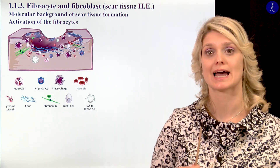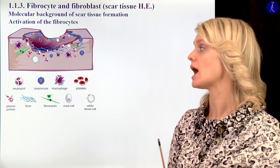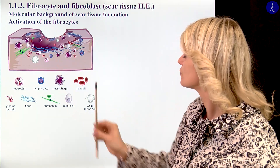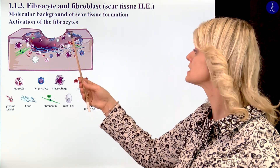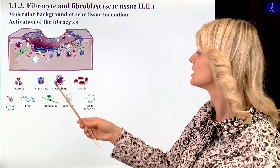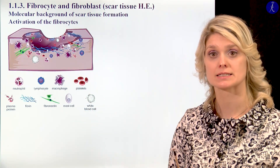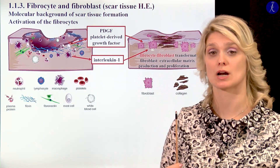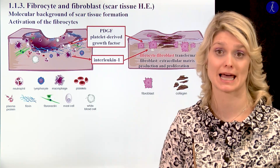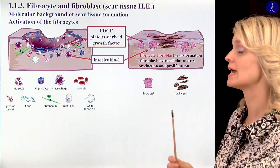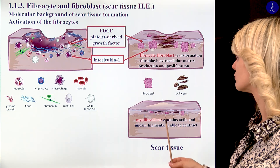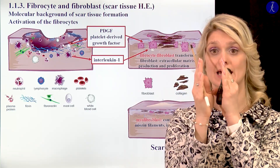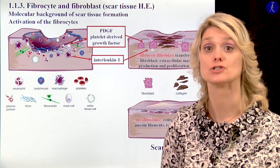I would like to tell you some words about the activation of these fibroblasts. How can we activate the fibrocytes? So here you can see the injury on the surface, where we have red blood cells, thrombocytes, a lot of neutrophil granulocytes, lymphocytes, and macrophages. These cells will produce different interleukins and different growth factors, which will activate the inactive fibrocytes located in the connective tissue — they will become fibroblasts. And the fibroblasts will produce a lot of fibers and extracellular matrix. We can also talk about special myofibroblasts, which contain myosin and actin, and they can help during the healing procedure to keep together the two sides of the wound.